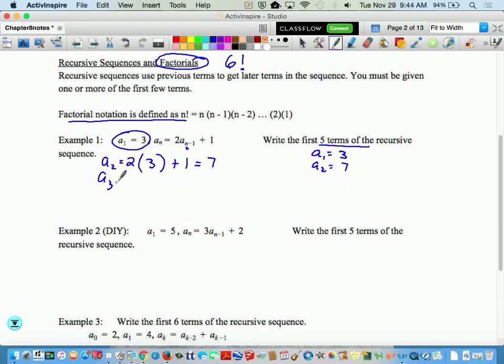And then I do my a sub 3. So again, this would be 2 times my very last answer. This is what this recursive notation means—always take your last answer and do what it's telling you to do.